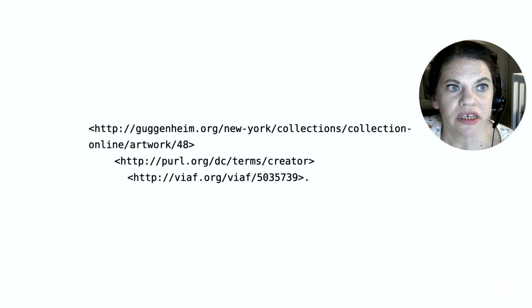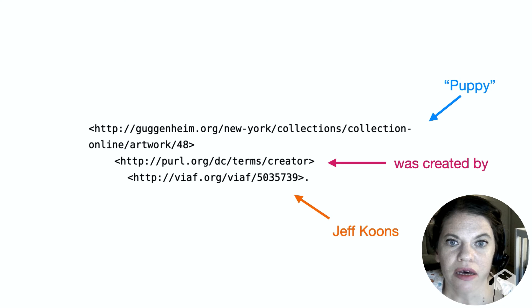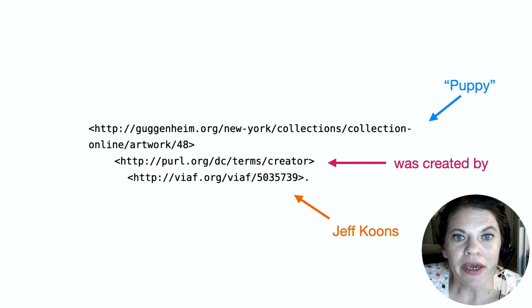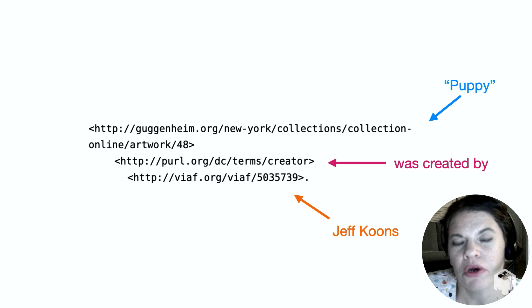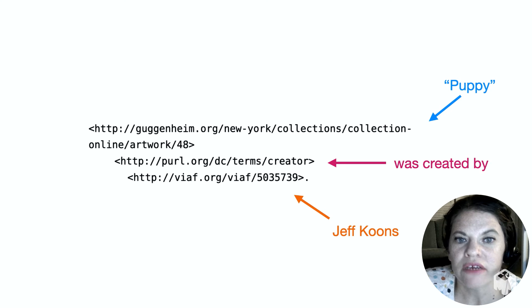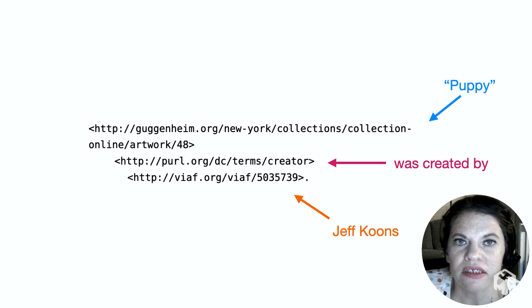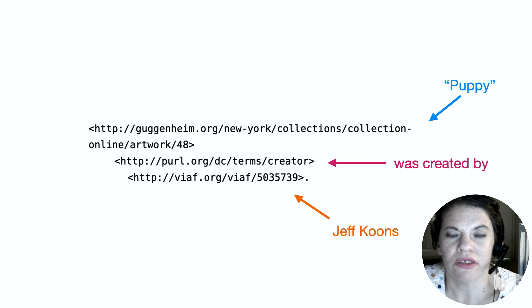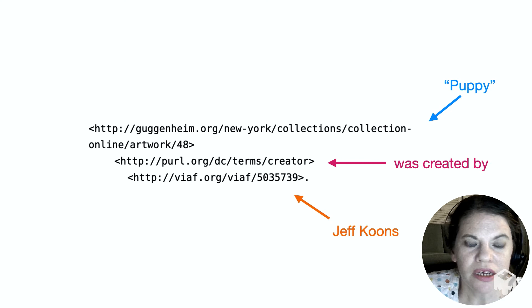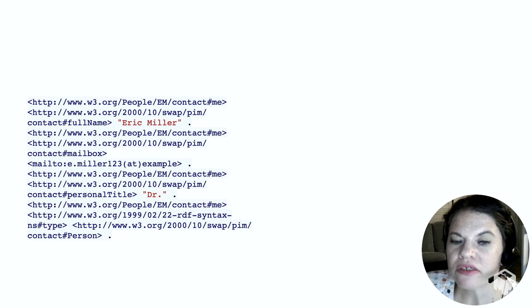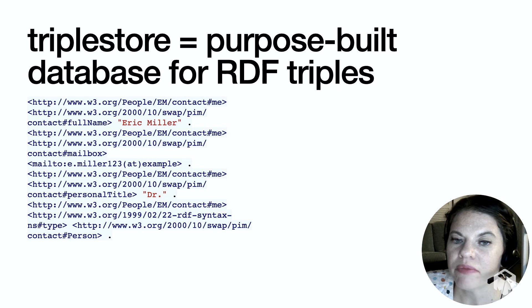So a triple expressed with URIs would look something like this — meaning that the artwork Puppy was created by the artist Jeff Koons. You may have noticed that URIs look a lot like URLs, and many times they actually are URLs, meaning they point to an actually existing page on the internet. It's nice when this is the case, but it's not always the case. What they're expressing is exactly subject, predicate, object — all expressed in Universal Resource Identifiers. A linked database looks like a bunch of triples one after the other, and that kind of database is often called a triple store. So if you hear someone talking about a triple store, that's what they mean: a database specifically built to hold RDF triples.